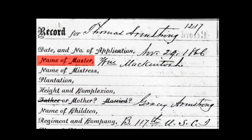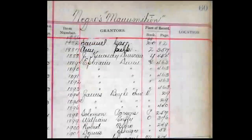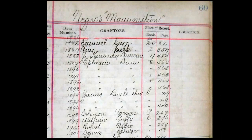This is a Freedman's Bank record. The Freedman's Savings and Trust Association was a banking system after the Civil War for formerly enslaved people as well as Civil War veterans. Here we have Thomas Armstrong, who said his master was William McKintosh.